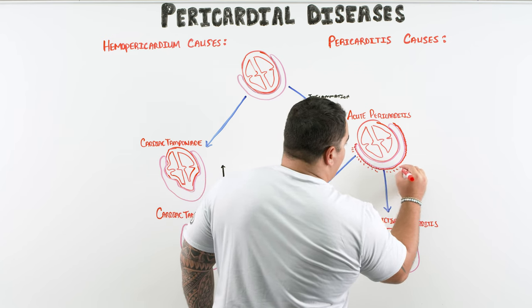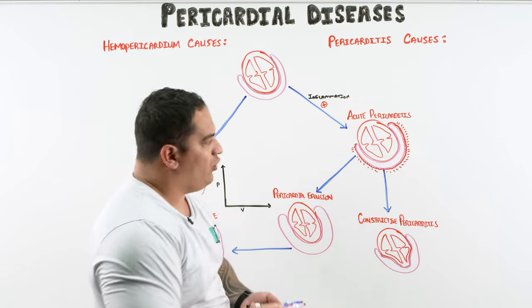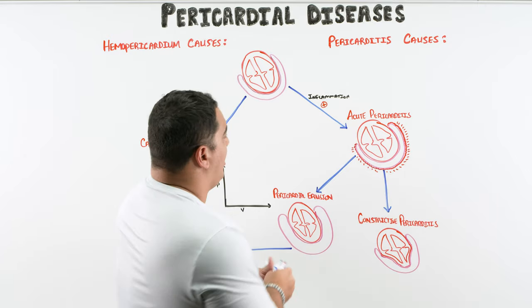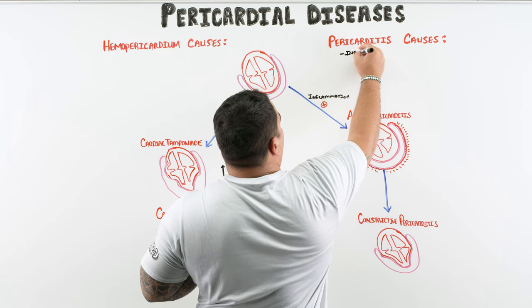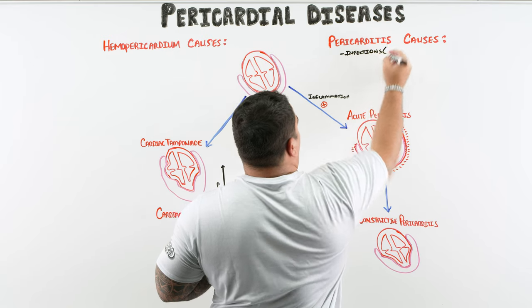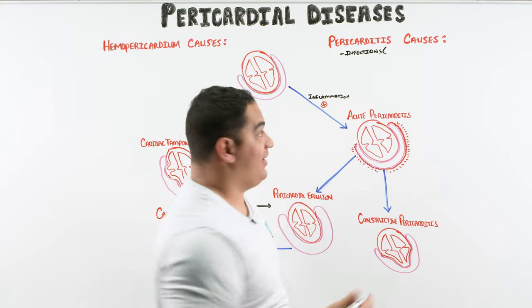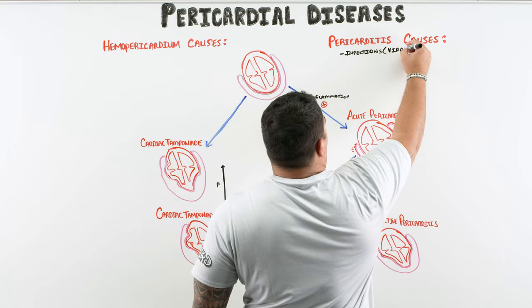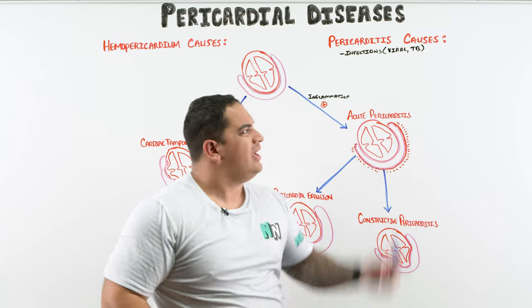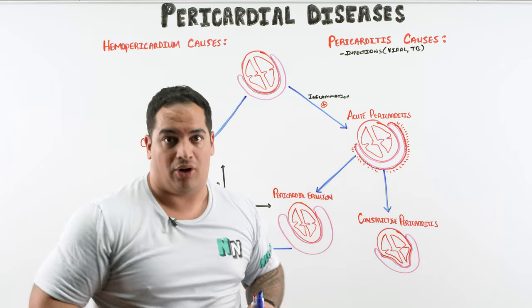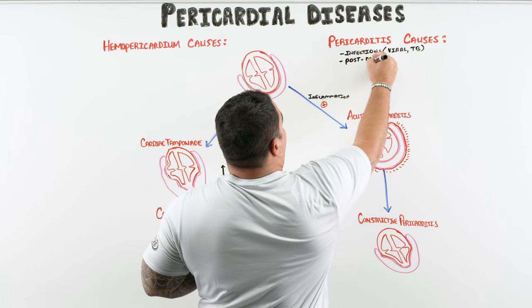Oftentimes it's idiopathic — we don't really know why it occurs. But generally we assume it's infectious. There are two types of infections: one is viral, most commonly Coxsackie B virus, and the other is tuberculosis, particularly in immunocompromised patients or endemic populations.